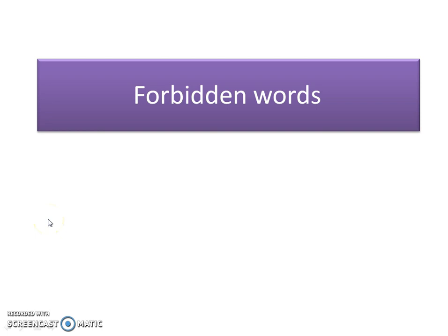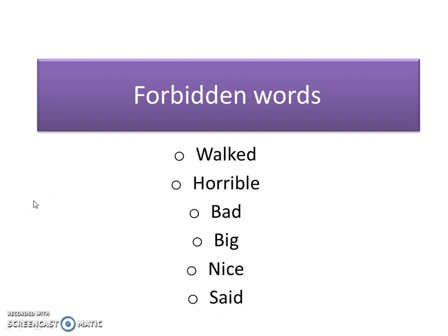The first tip is to push up your vocabulary. There are certain words which are very straightforward to learn a range of more accurate synonyms for. We call these 'forbidden words' because what you do is replace them — every time you see them in your work, ask yourself if there's a better word. Sometimes a simple word is correct, but other times there's no excuse for it, like 'bad.' Find a range of synonyms, learn how to spell them, and take those more powerful words in with you.